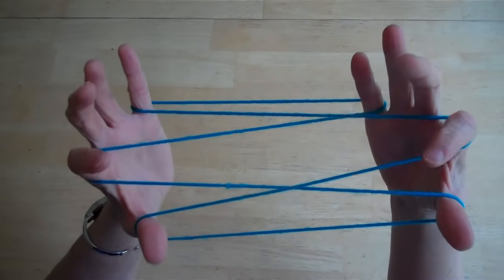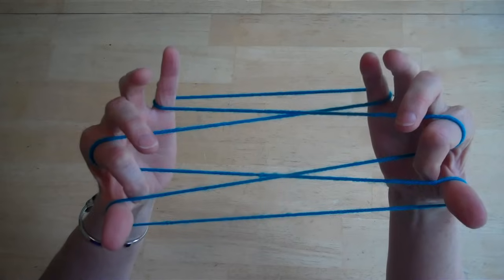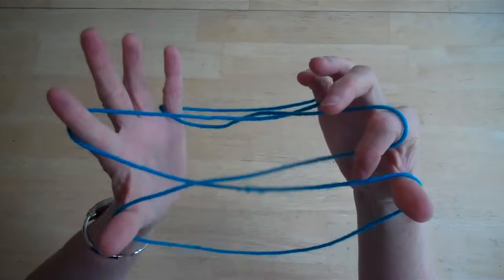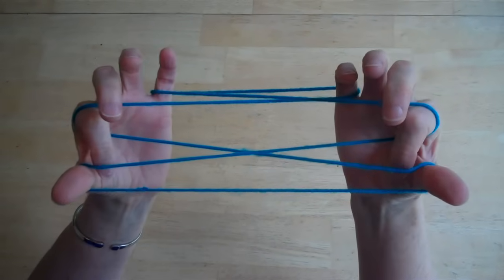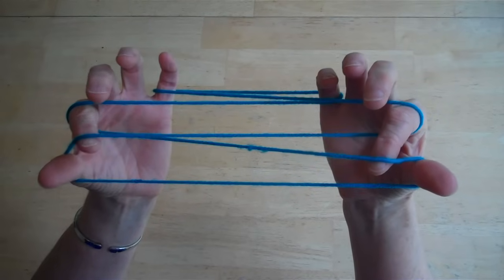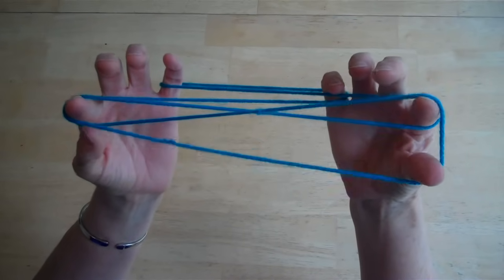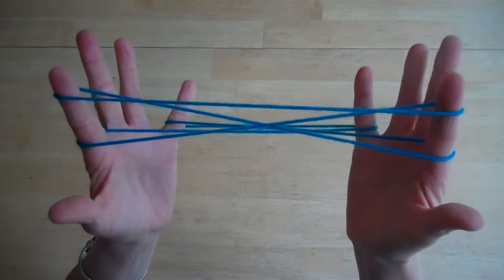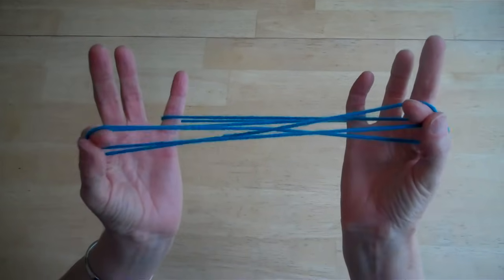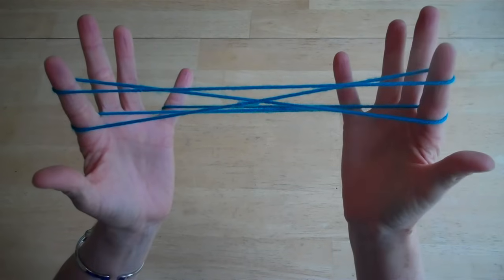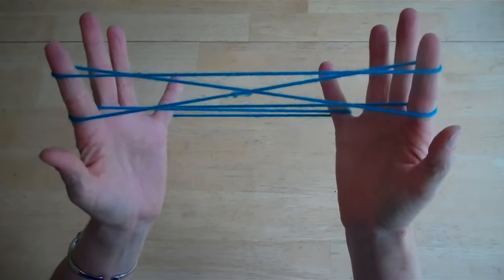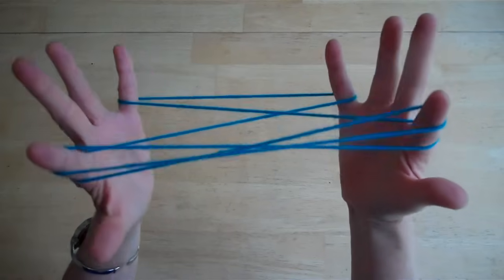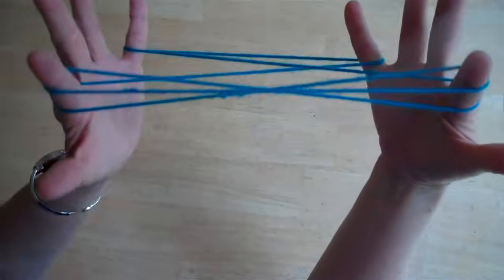The next part, you're going to take your pointers. You're going to come down right here. You're going to pick up this second string with the pointers. You're going to lift it completely off of your thumb. Now you've got both of these on your pointer. You want to leave it up high like that. Don't pull it down yet. It should look like that.